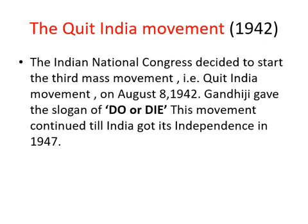Uske baad Quit India Movement start hua 1942 mein. Indian National Congress ne start kiya ye third mass movement — bahut bade level par — jiska naam diya gaya Quit India Movement. Ye kab start hua tha? 8 August 1942 mein. Ismein Gandhiji ne ek slogan diya — 'Do or Die' — karo ya maro. Ye movement chalta raha jab tak India ko independence nahi mili, 1947 tak.